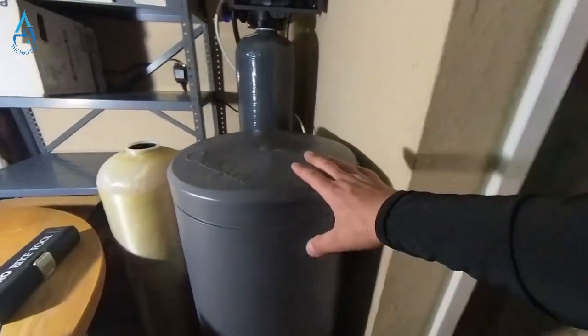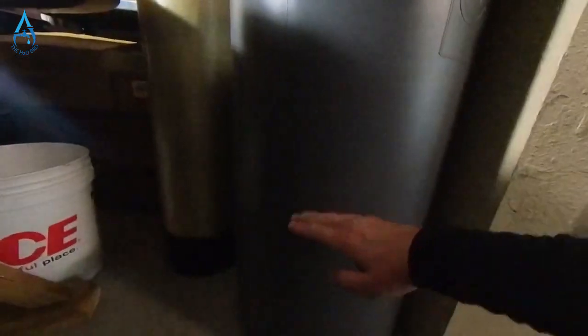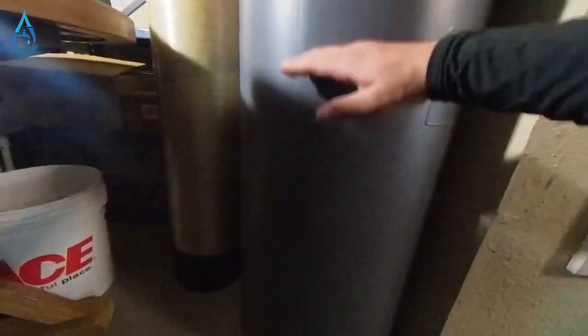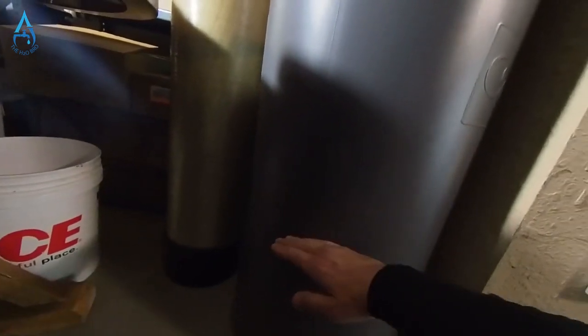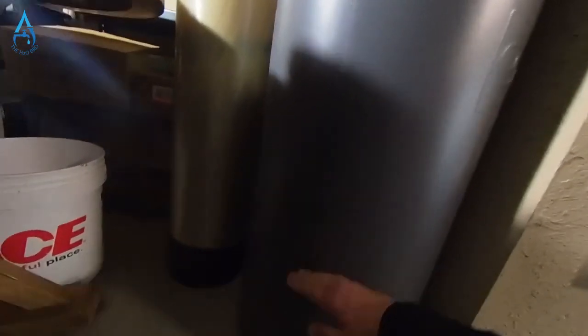Basically a salt bridge means that you're going to have a hollow part down here and it's going to be solid up here where the salt is. Down here it's going to be hollow because the salt is sitting here and it's not dropping down. If the salt doesn't drop down, then you're not going to be getting soft water.